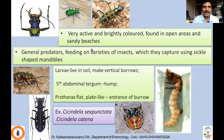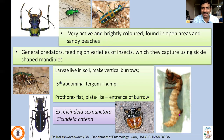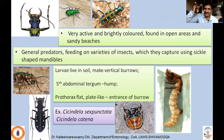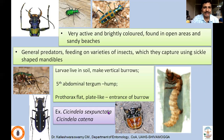Tiger beetles are very colorful, very active, brightly colored, found in open areas and sandy beaches. They are general predators feeding on varieties of insects, which they capture using sickle-shaped mandibles. Larvae live in soil in vertical burrows, waiting with mandibles open — the pronotum is flat and plate-like, covering the burrow entrance. Whenever a small animal crawls by, they capture and devour it within the soil surface. Common species include Cicindela sexpunctata and Cicindela catena.